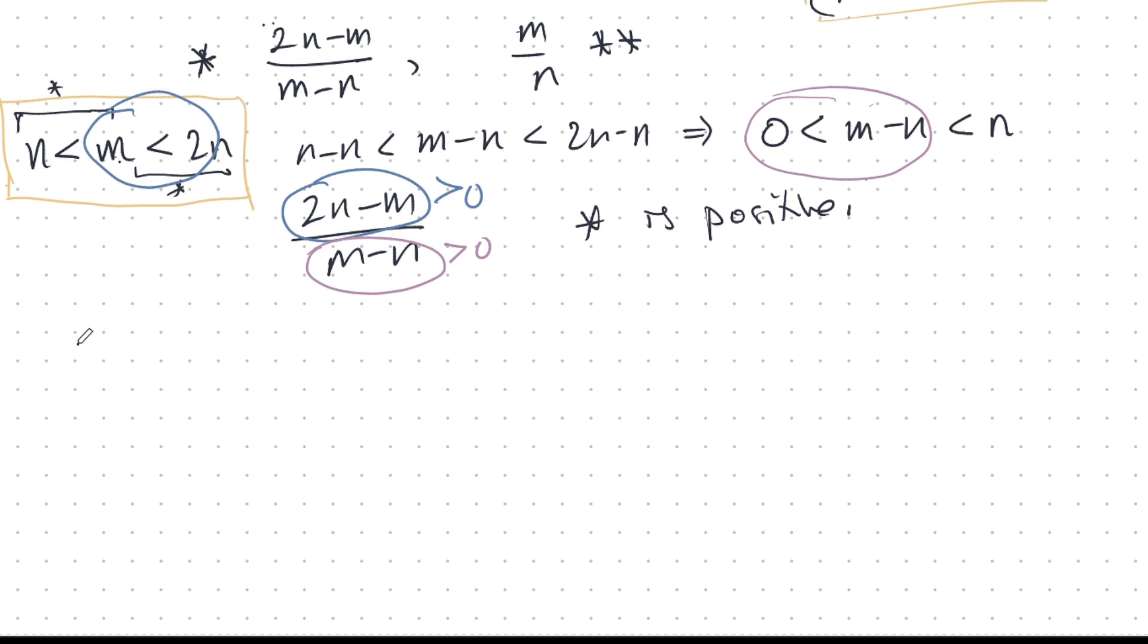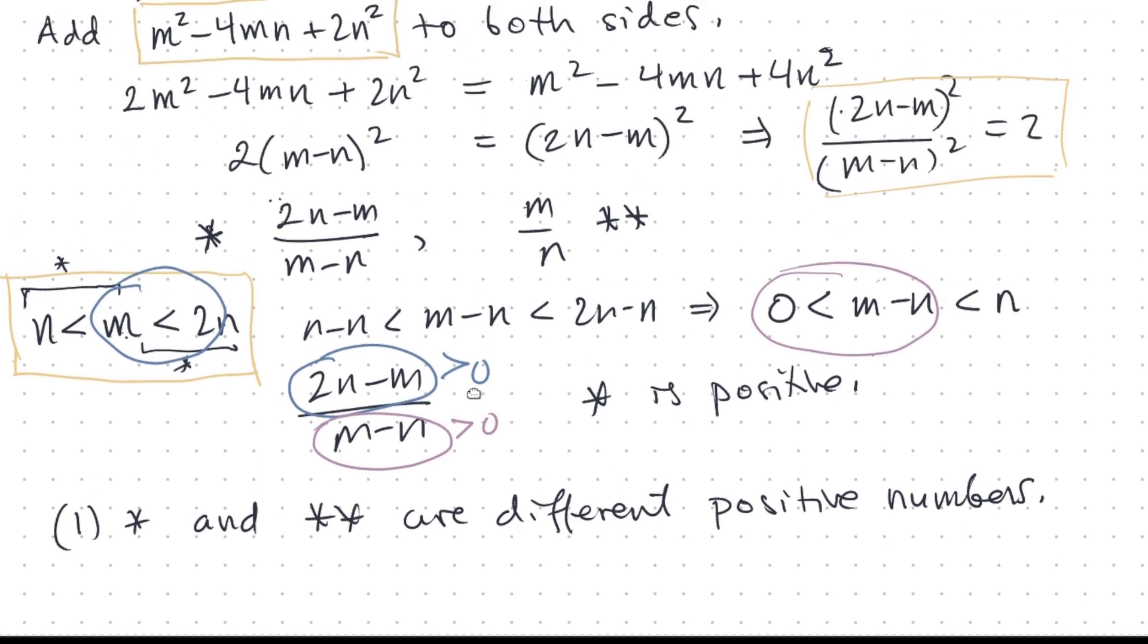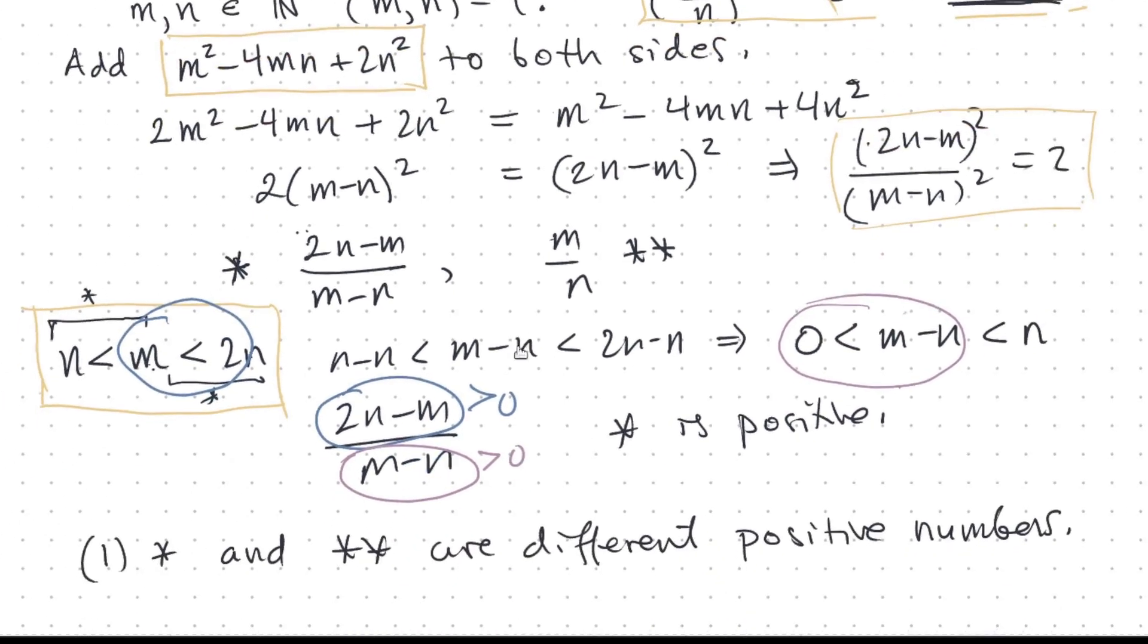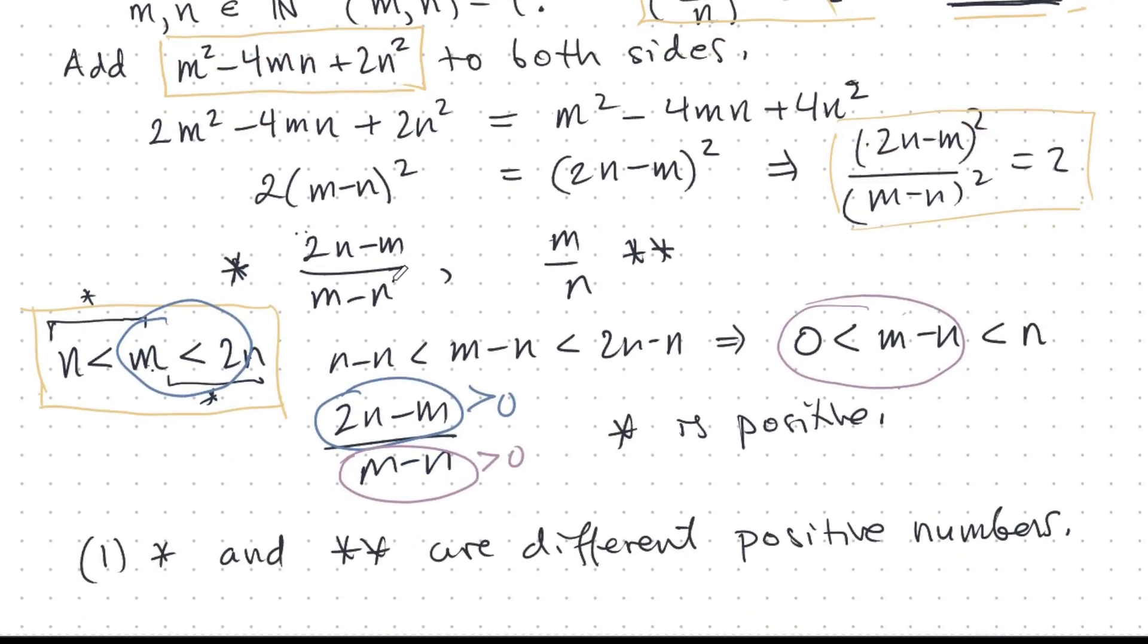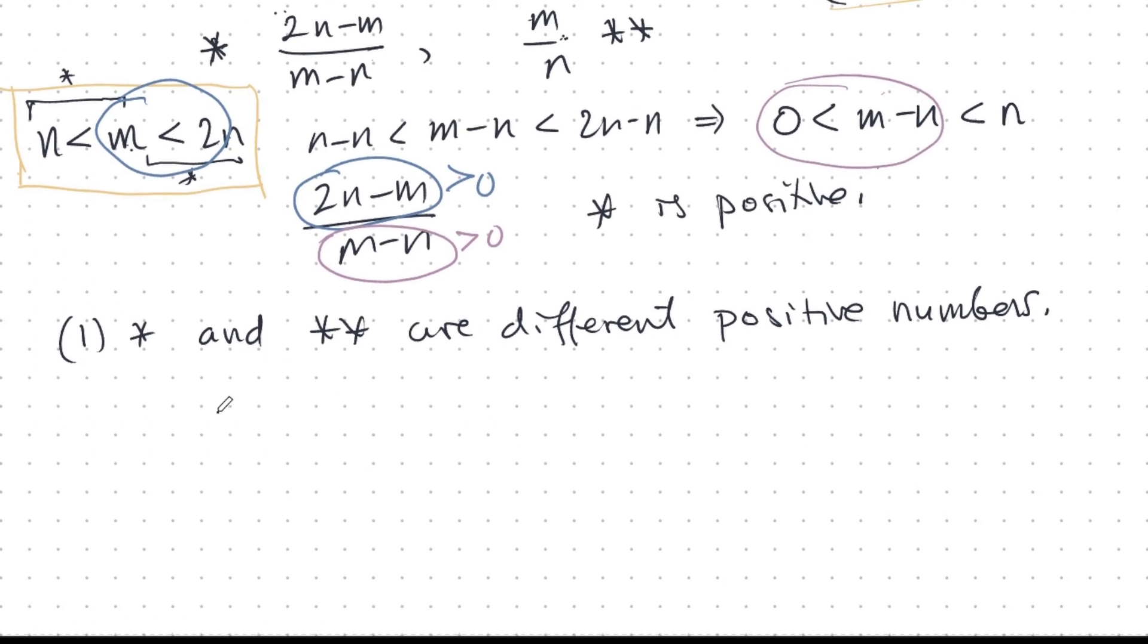There are two cases. Case 1: Star and star-star are different positive numbers. Well, that leads to a contradiction because we see here that when you square star you get 2, and when you square star-star you get 2. That can't be because you can't have two different positive roots of 2. We just proved that earlier. That's a contradiction. Positive root of 2 is unique, so that's impossible.